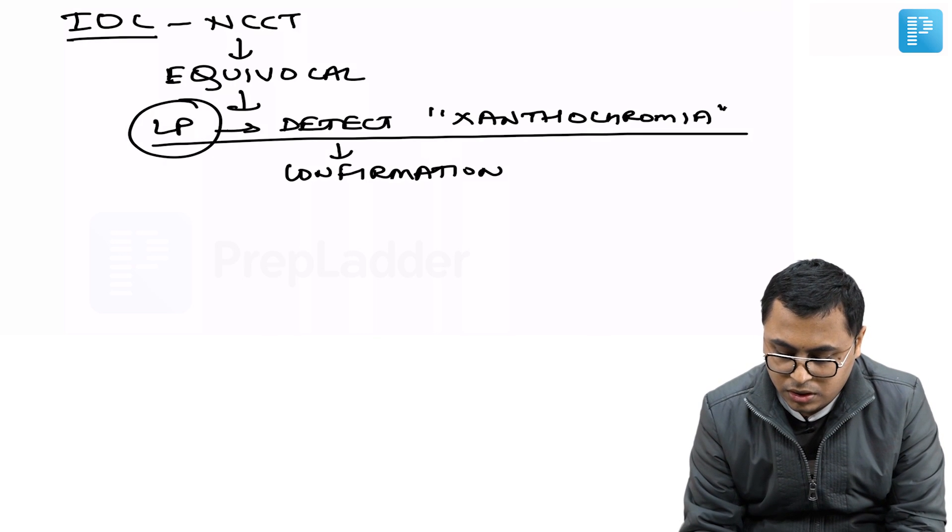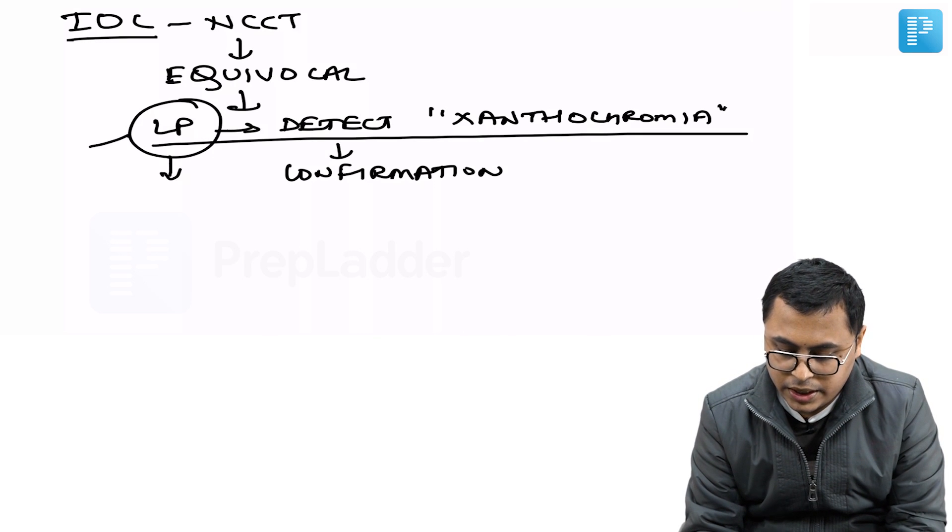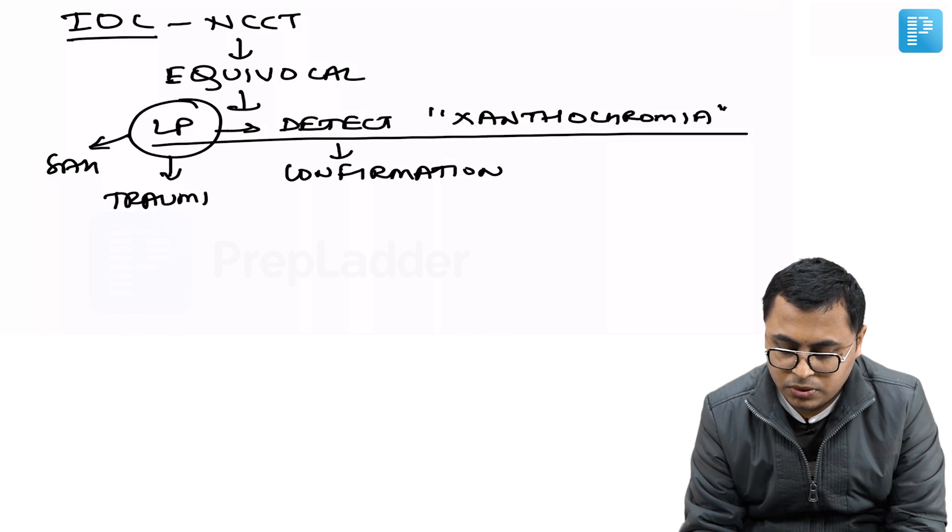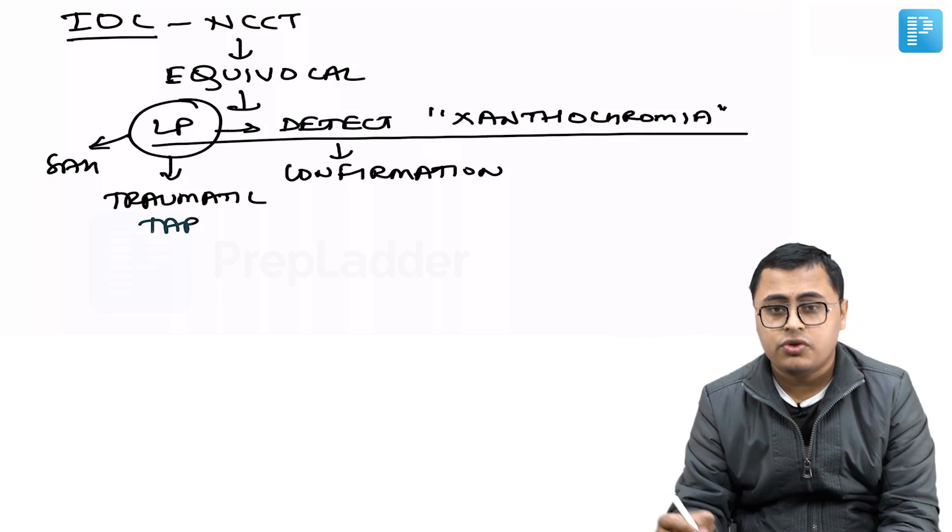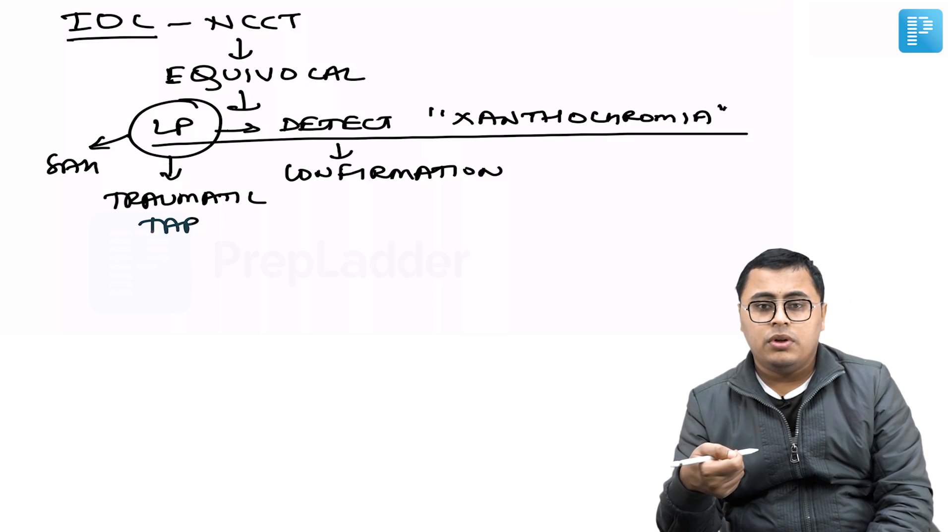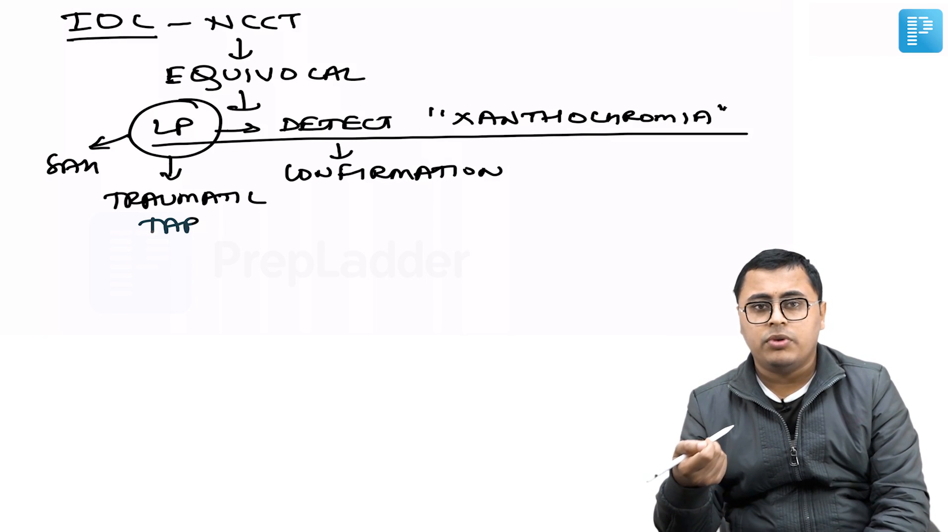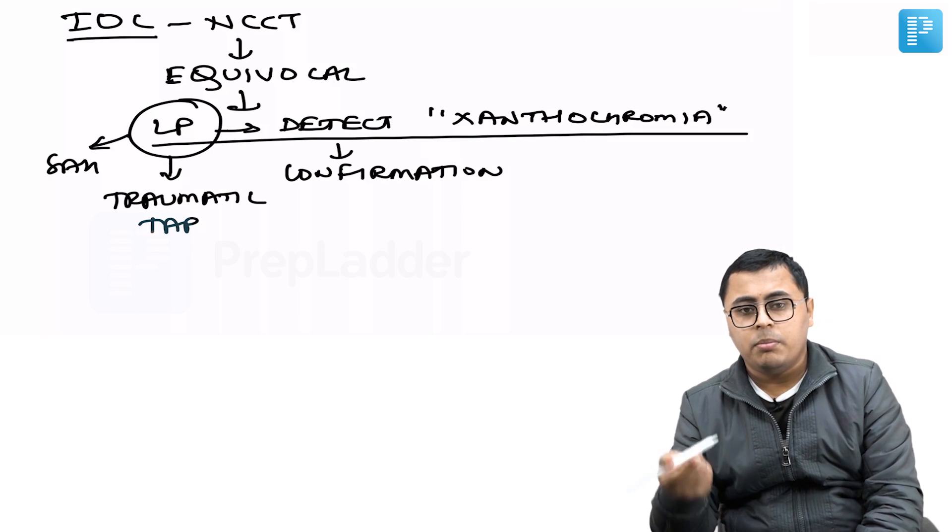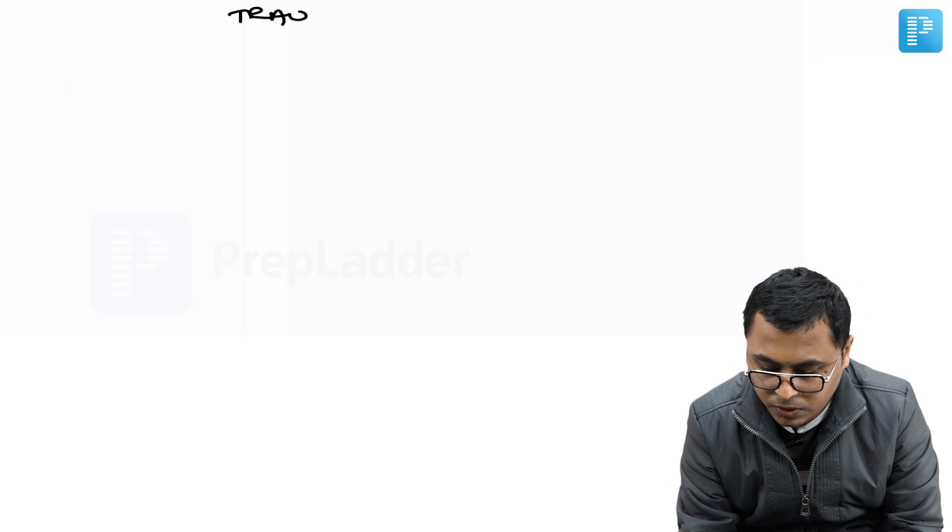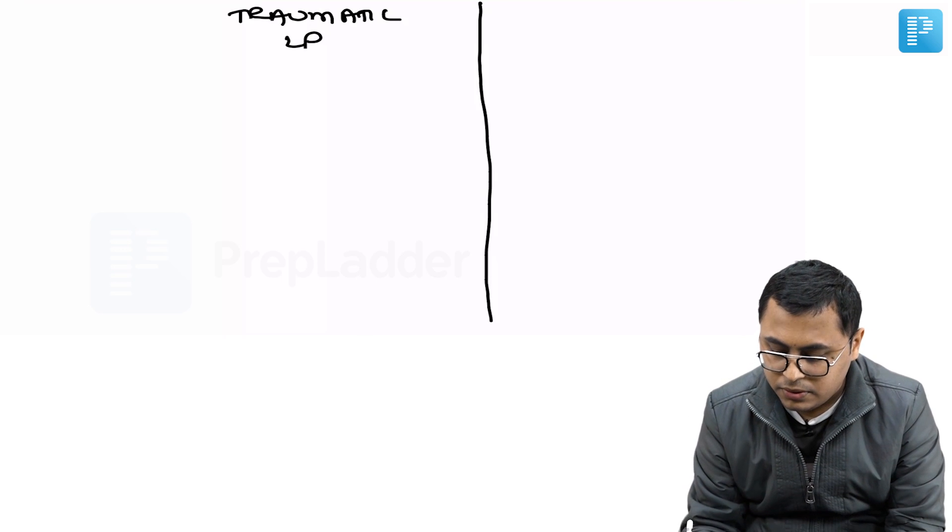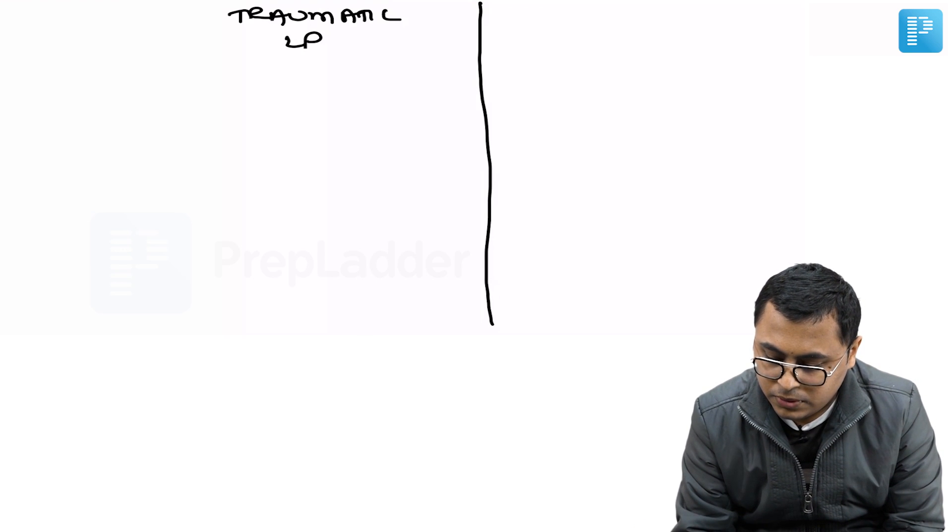Always, lumbar puncture in subarachnoid hemorrhage is to be differentiated from traumatic tap. Traumatic tap is presence of blood due to the procedure. The lumbar puncture injury to some of the vessels while doing a lumbar puncture can result in a traumatic tap and blood in the CSF. So these two need to be differentiated.